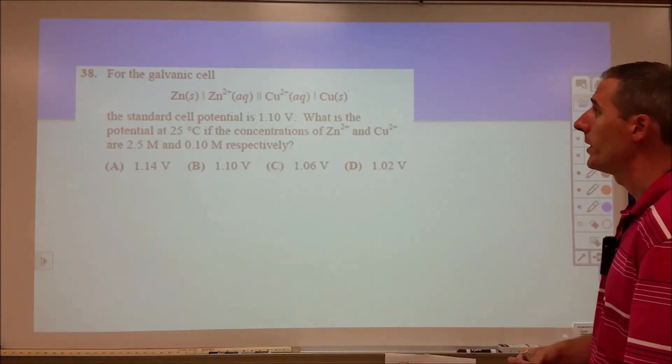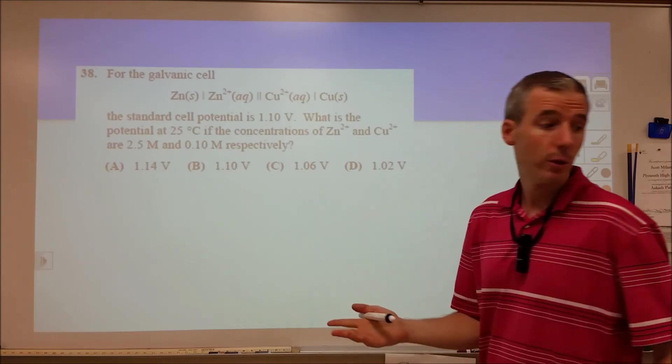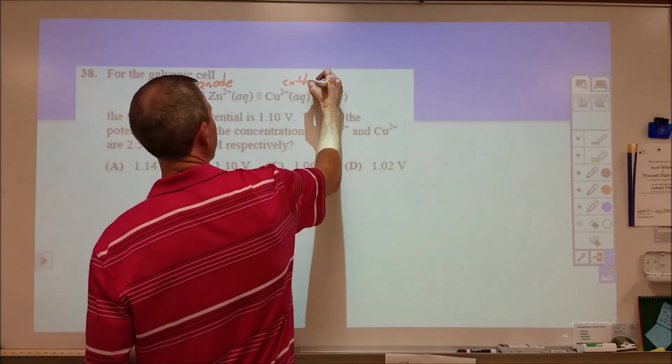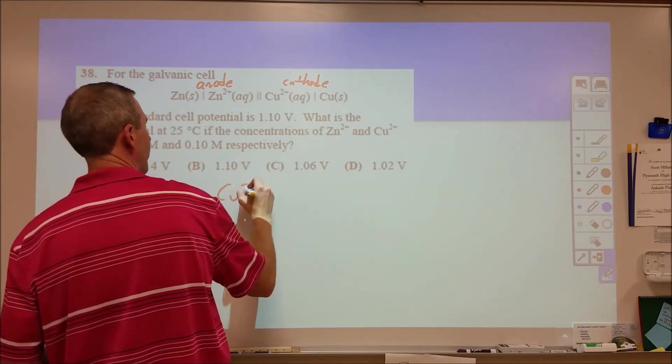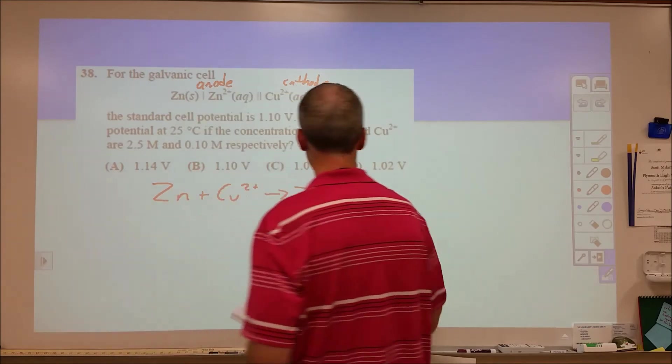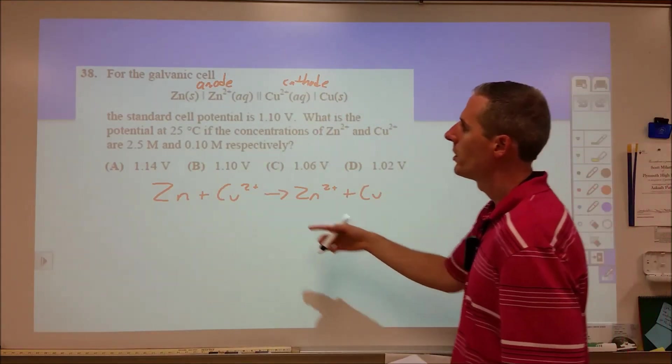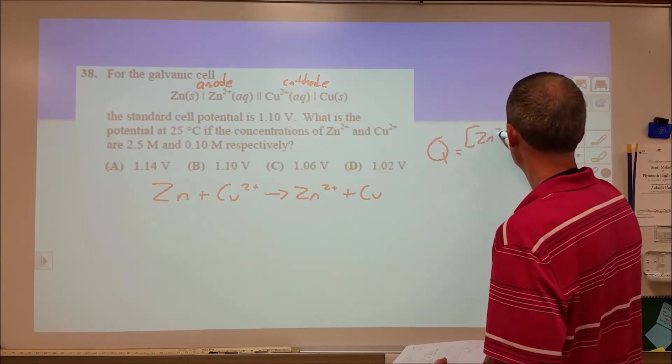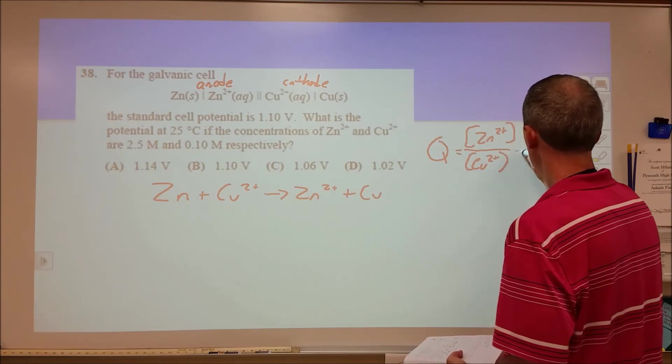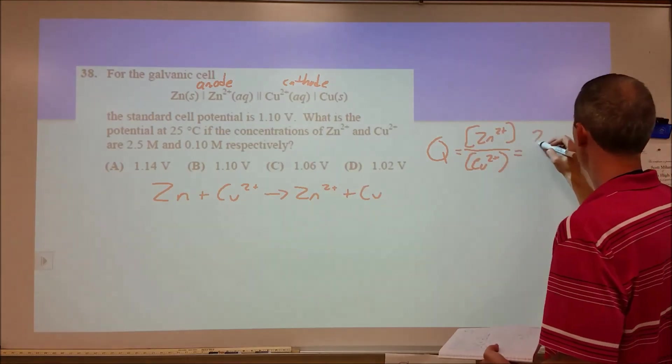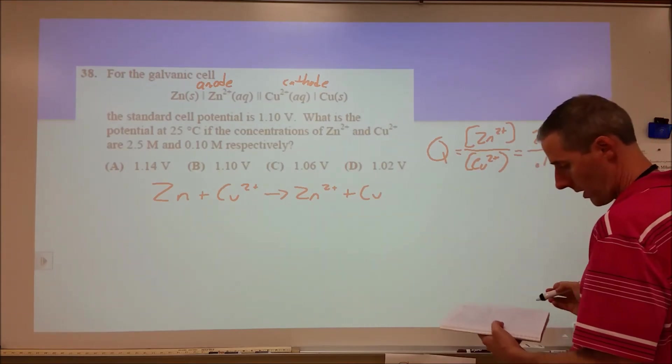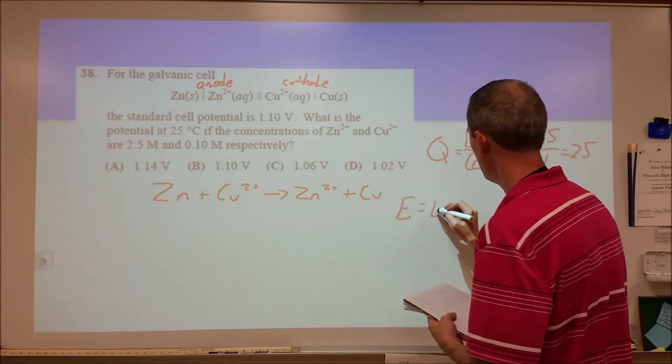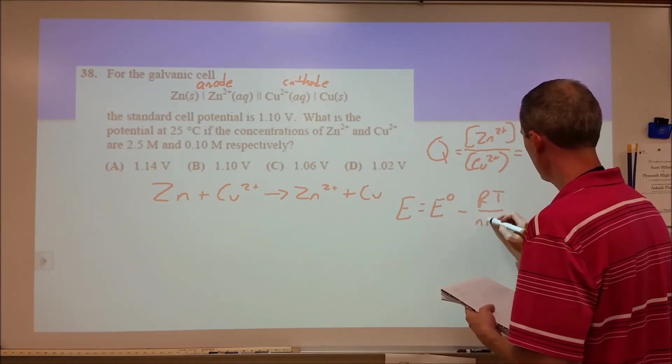Problem 38, on the other hand, not so easy. We're looking at a Nernst equation, which is given to you on the front cover of the exam. This is the anode, this is the cathode. So our reaction is the zinc reacting with the copper 2+ to make zinc 2+ and copper. What they're getting at here is a Nernst equation calculation. We have non-standard conditions in terms of concentration. So our Q is the concentration of zinc 2+ divided by the concentration of copper 2+. Zinc 2+ is 2.5 over 0.1 gives us a Q of 25.